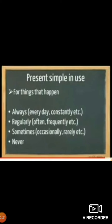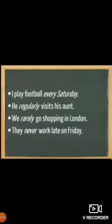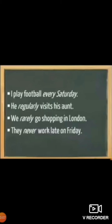Simple present tense is used for things that happen regularly: always, every day, constantly, often, frequently, every week, every year, every month. It is also used with sometimes, occasionally, rarely, and never. For example: 'I play football every Saturday.' 'He regularly visits his aunt.' 'We rarely go shopping in London.' 'They never work late on Friday.' Even 'never' describes a routine.